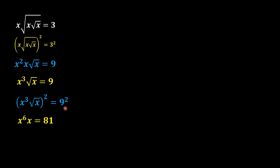In the next step we should add both of these powers, applying the basic algebra rule: if the bases are the same then their powers add together. As a result we get x to the power 7 equals 81.